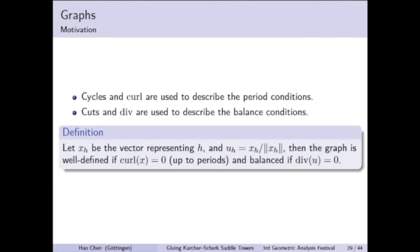Here I say same point, it is same up to periods. We say that the graph is balanced if the divergence of the unit vectors vanishes. It can be understood that there is a unit force pulling the vertices together, and the graph is balanced under this force. In fact, it can be shown that a balanced graph is the critical point of the length functional.